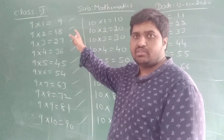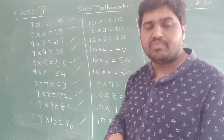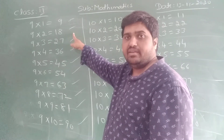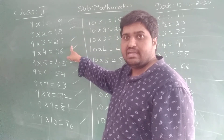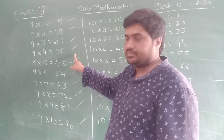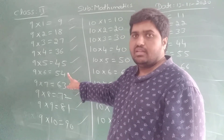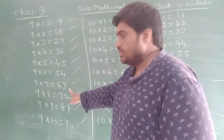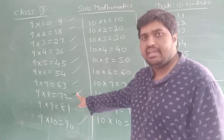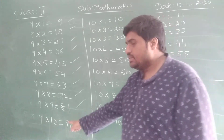One more time — tell me. 9, 1 is 9. 9, 2 is 18. 9, 3 is 27. 9, 4 is 36. 9, 5 is 45. 9, 6 is 54. 9, 7 is 63. 9, 8 is 72. 9, 9 is 81. 9, 10 is 90. Okay children?